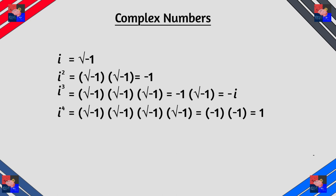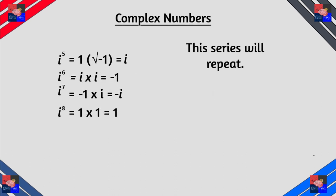i cubed is basically i squared times i which if you do the arithmetic it's negative i and i to the fourth which is basically two times negative one is one. Now this set of numbers repeats.